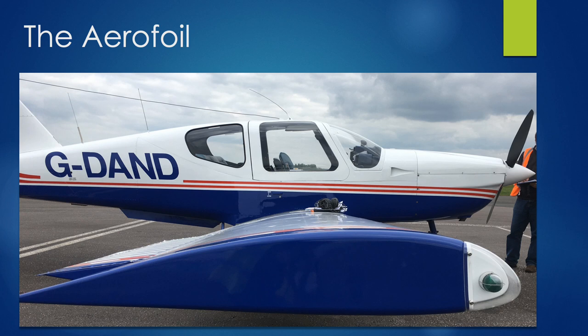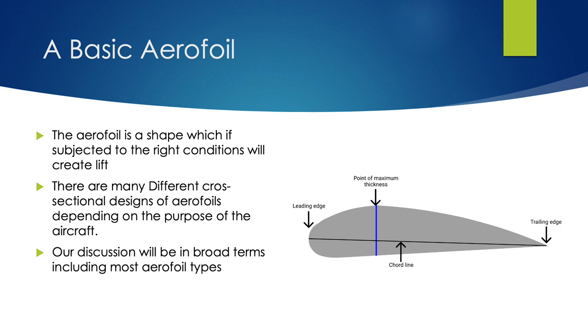Here's a cross-sectional area of an aerofoil. You can see the whole aircraft — the fuselage, cockpit, engine, and wing — and the cross-sectional area of the wing is that teardrop shape as seen from a side view. We're now going to look at the aerofoil itself, as the wing is the device that produces lift for an aircraft. We'll look at the different names of components and how the wing produces lift. An aerofoil is a shape which, if subjected to the correct conditions, will create some kind of lift, and there are many different cross sections.